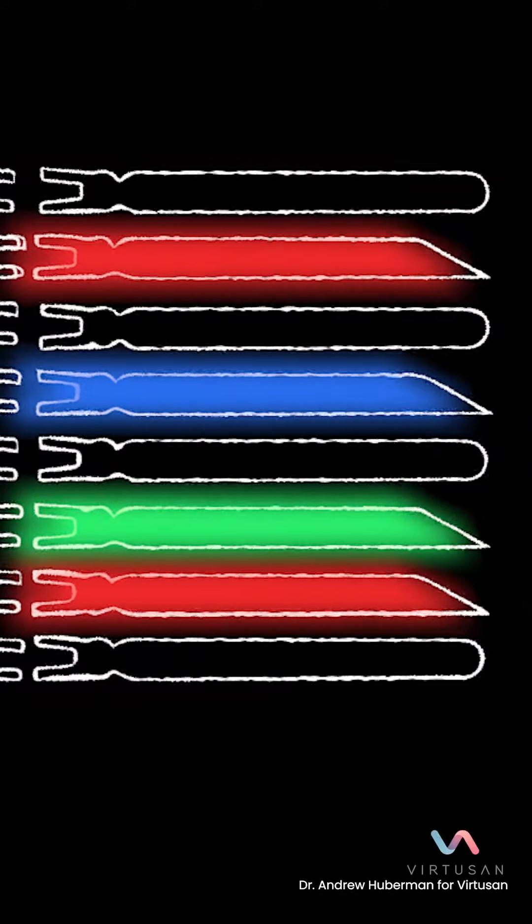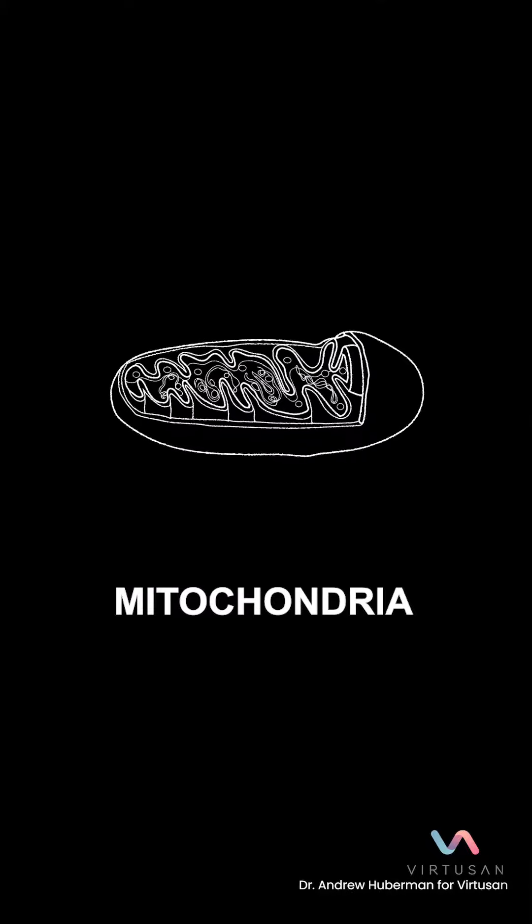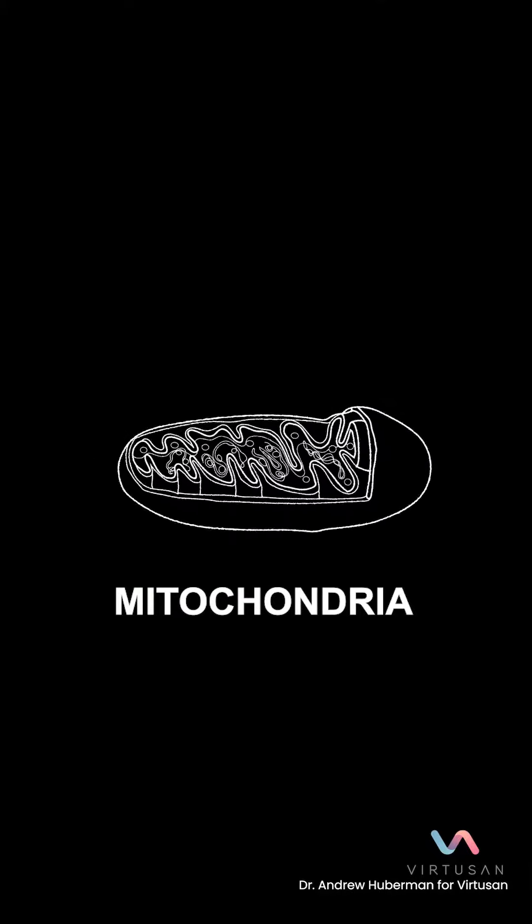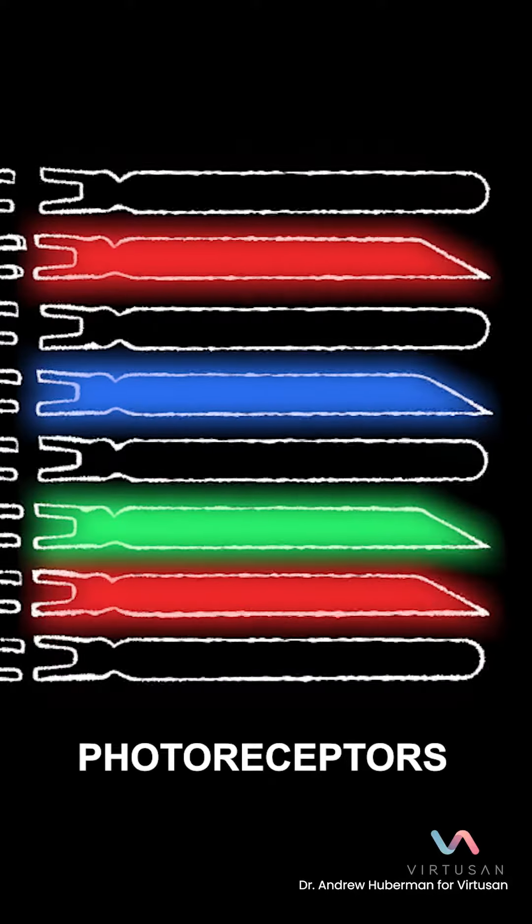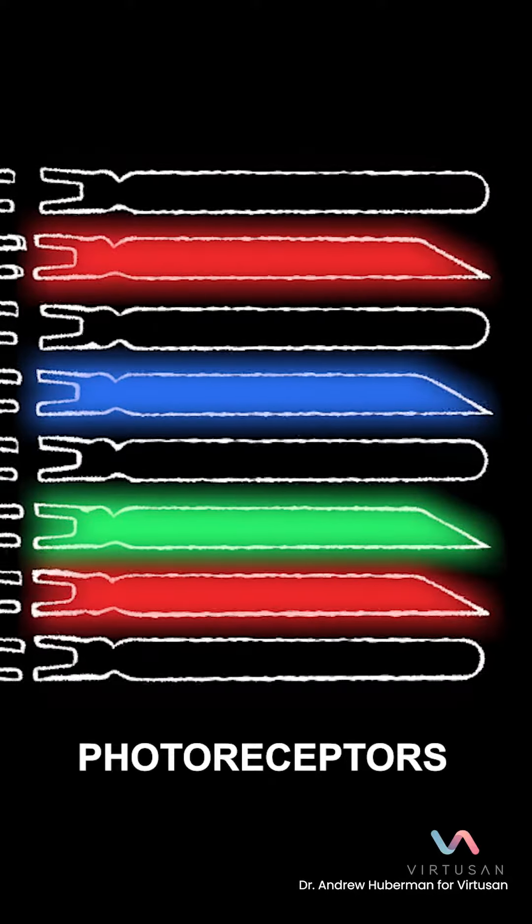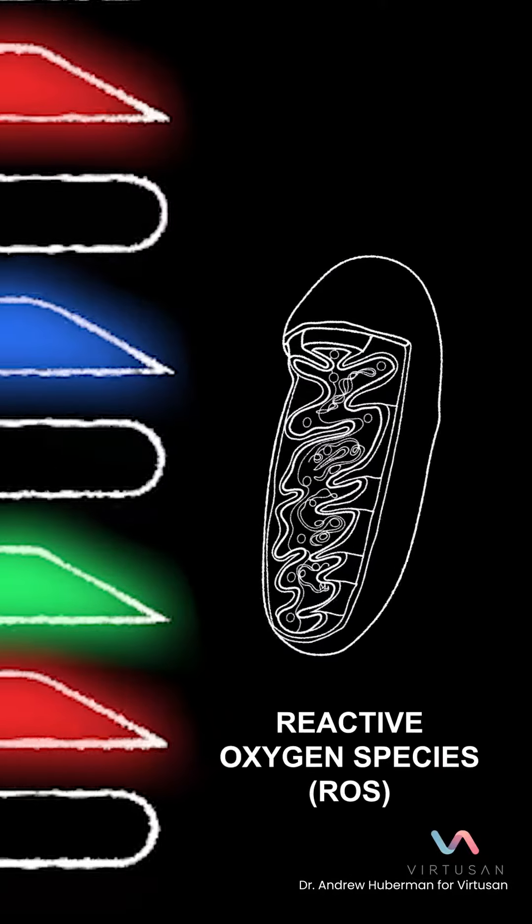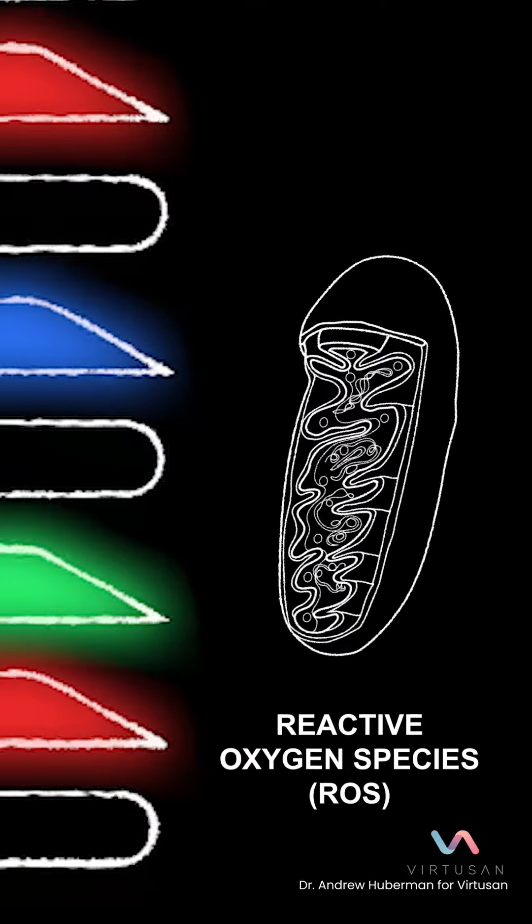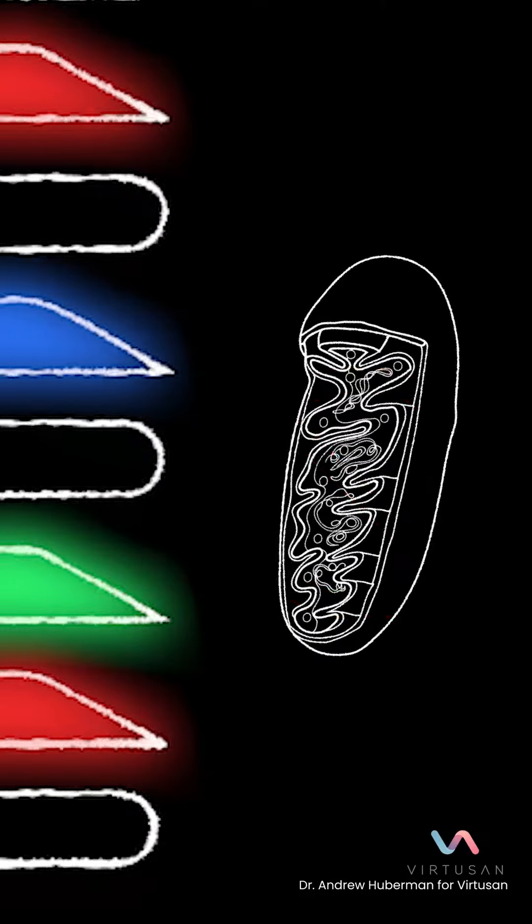ATP has a direct relationship with the mitochondria. Mitochondria are just a portion or a little organelle within the cells that's responsible for generating energy. Over time, in these photoreceptors, there's a buildup of what are called reactive oxygen species, which limits the ability to which the mitochondria can make and utilize ATP.